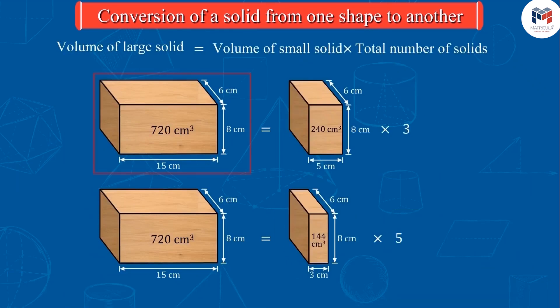So, we can say that if a solid is converted into a smaller solid of equal measure, then the product of volume of the small solids and the total number of small solids is equal to the volume of the larger solid.